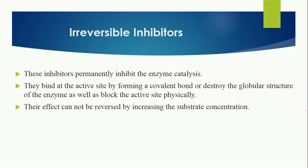The last type is irreversible inhibitors. These inhibitors permanently inhibit enzyme catalysis — they bind at the active site by forming covalent bonds, or they destroy the globular structure of the enzyme by blocking the active site. As the name indicates, they are irreversible, so their effect cannot be reversed even by increasing the substrate concentration. That was all about enzyme inhibitors and their types.